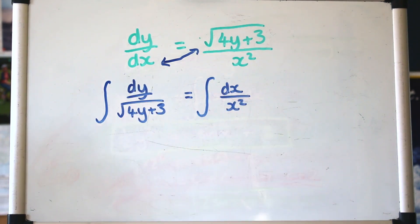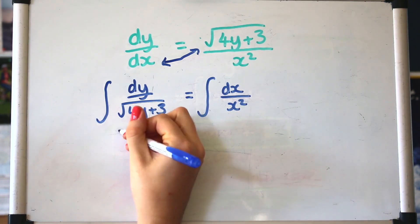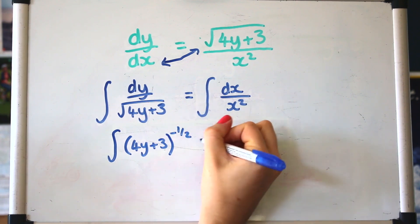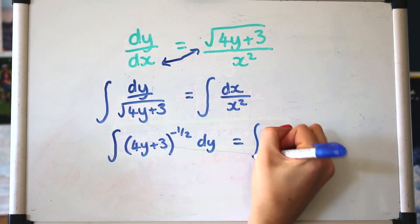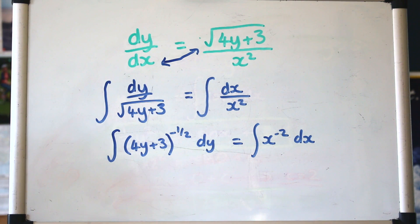So that's the dy with the y bit and the dx with the x bit, and we can apply an integral on both sides. At the moment that looks a bit nasty to integrate, so we can write the powers at the top. That looks a bit better, doesn't it? Now let's integrate.